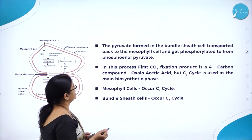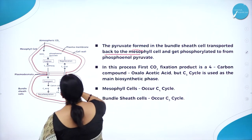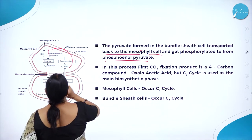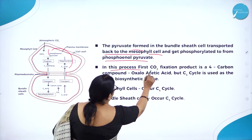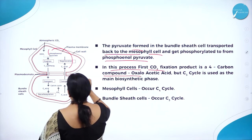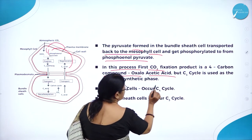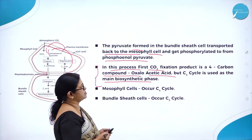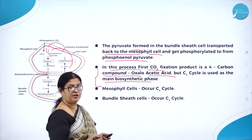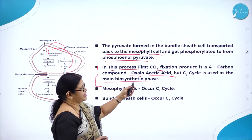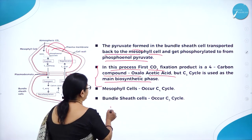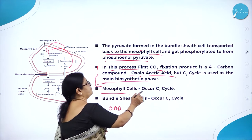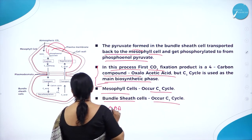The pyruvate formed in the bundle sheet cell is transported back to the mesophyll cells and gets phosphorylated to form phosphoenol pyruvate. In this process, the first carbon dioxide fixation product is a four carbon compound called oxaloacetic acid. But the C3 cycle is used as the main biosynthetic phase. So in summary: the C4 cycle takes place in mesophyll cells, and the C3 cycle takes place in bundle sheet cells.